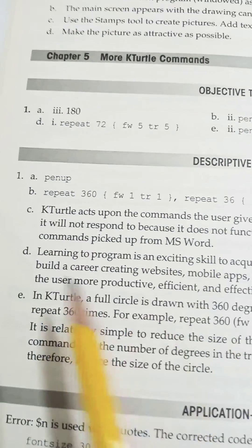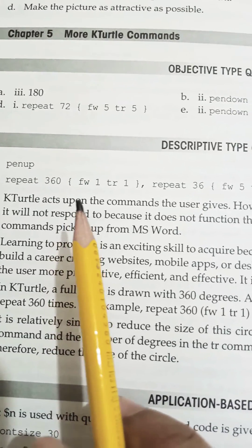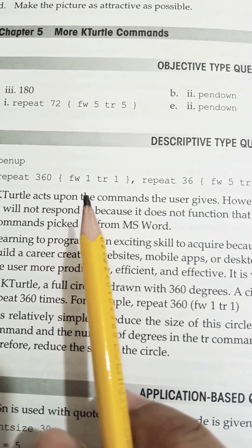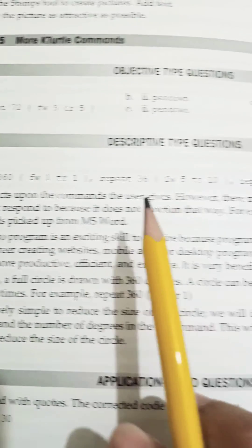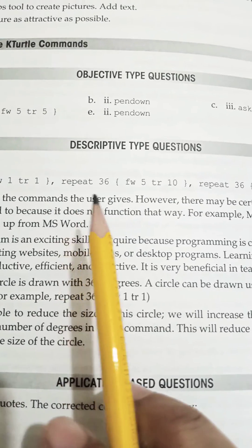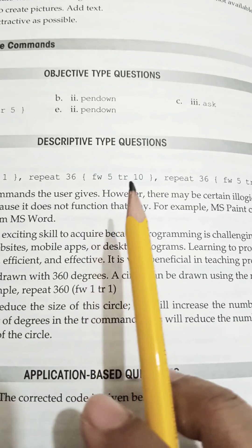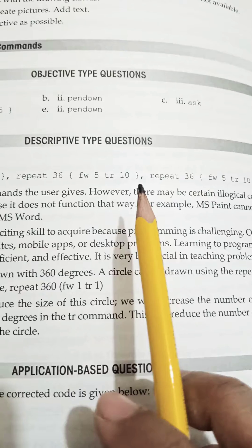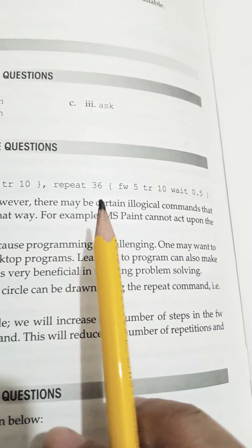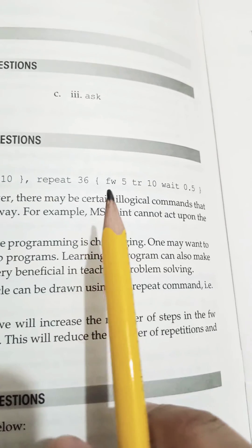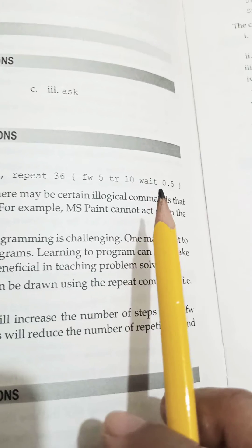The answer is repeat space 360 space bracket space fw space one space tr space one space bracket close. The second command is repeat space 36 space bracket space fw space 5 space tr space 10 space bracket close. And the third command is repeat 36 space bracket space fw space 5 space tr space 10 space wage space 0.5 space bracket close.